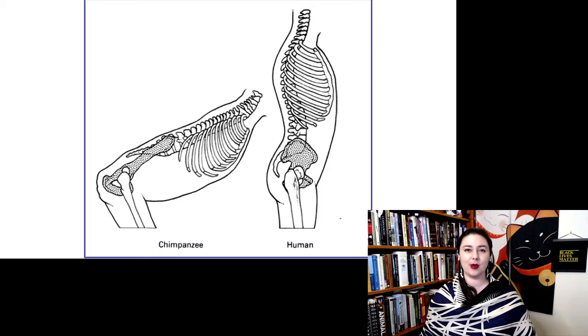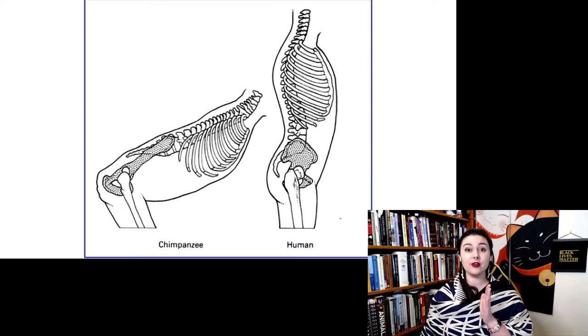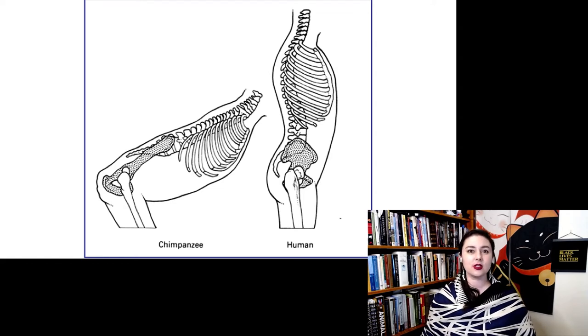Here we're comparing our posture to a chimpanzee. So we just balance everything right on top of our legs. Humans are unique that we are going for this balancing, very delicate balancing act posture rather than any sort of counterbalance.